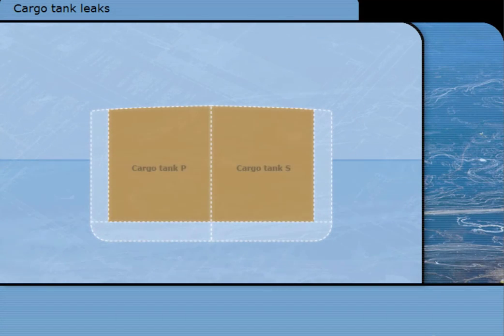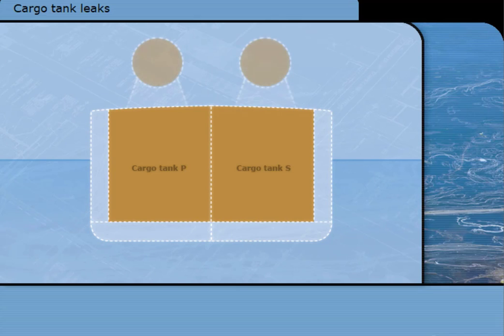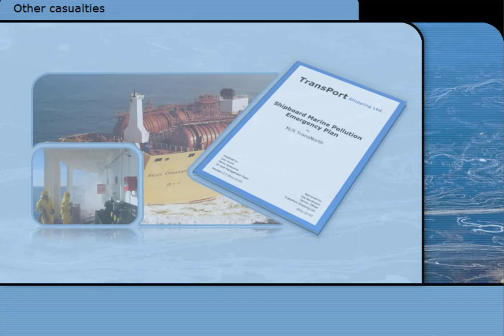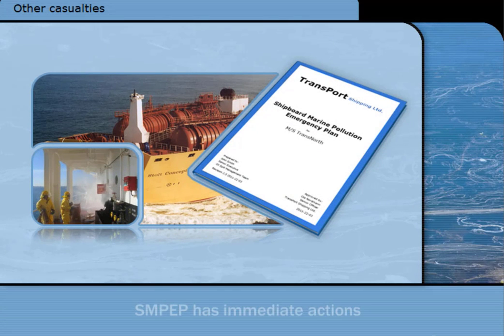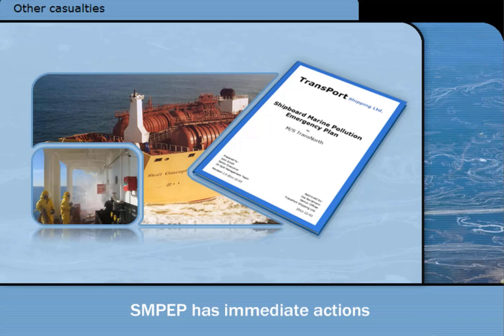There are many rules on the construction of cargo tanks and the materials to be used. Some cargoes are so dangerous that they must be carried in limited quantities per tank, or in tanks which are independent of the ship's structure and less likely to leak. Annex 2 attempts to minimize pollution from other casualties by means of the SMPEP, which contains the necessary immediate actions.